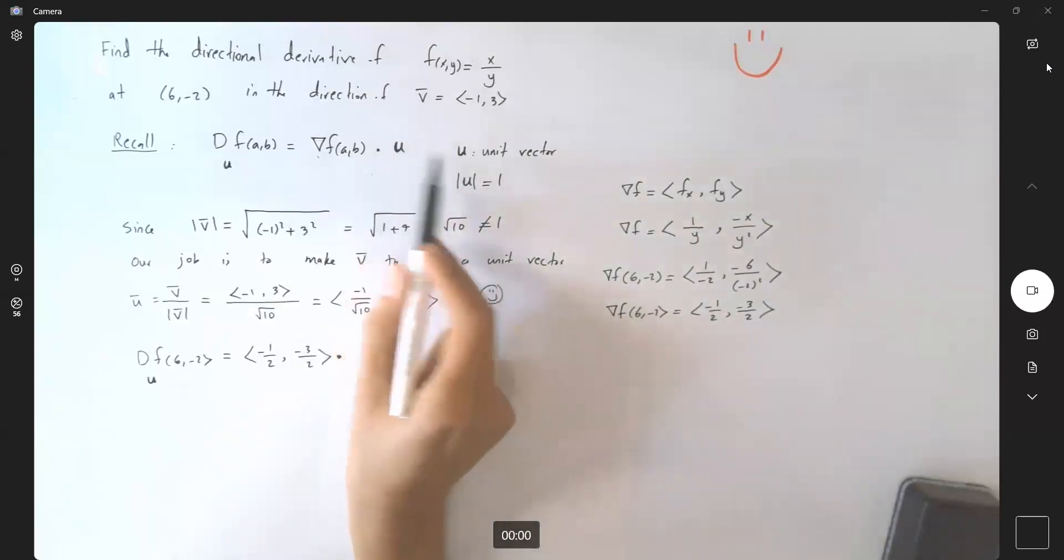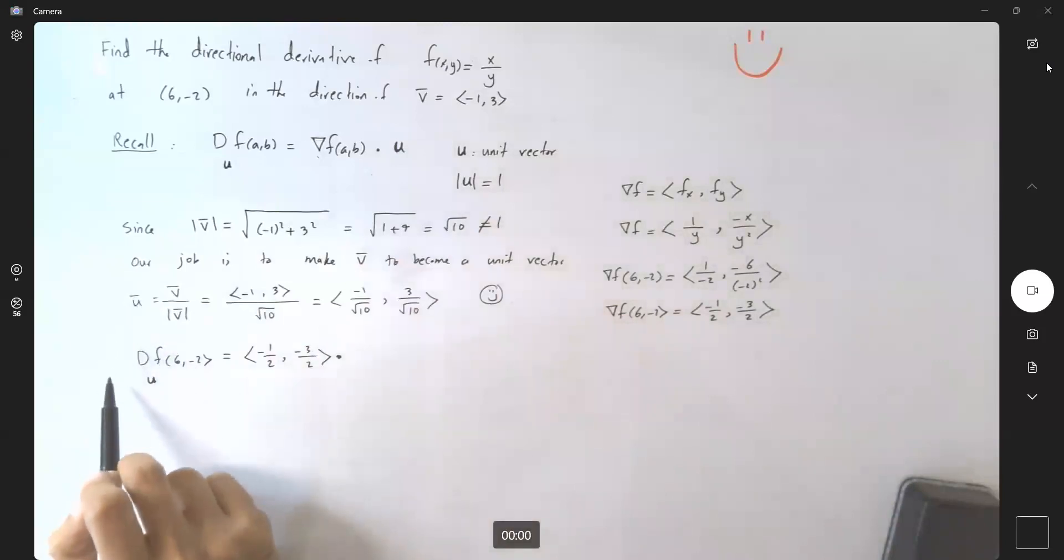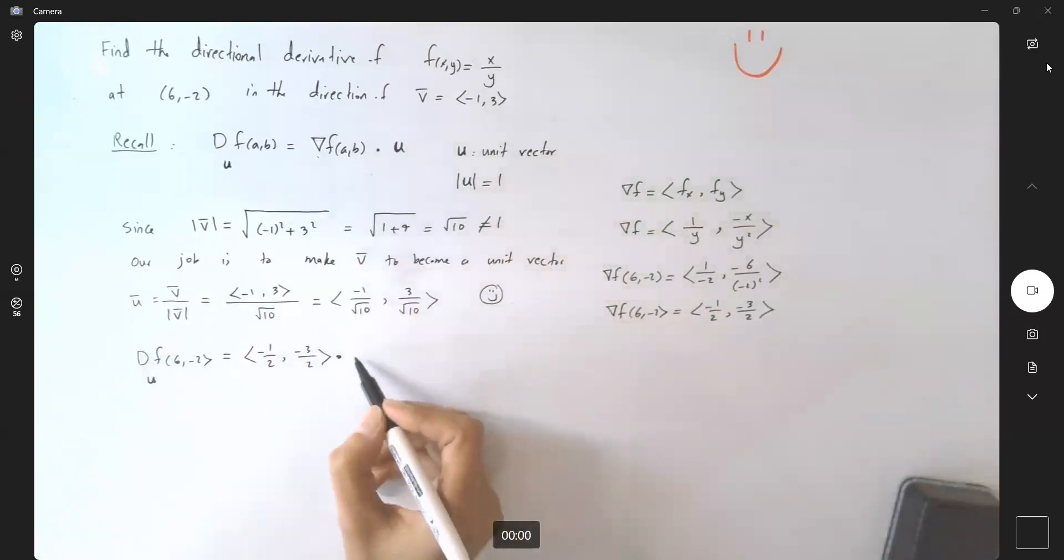It's dot product with what? With unit vector u. Either a bar or you can use the bar on top of it. (-1/√10, 3/√10).